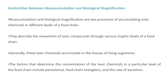Now let's look at the similarities. Both bioaccumulation and biomagnification are two processes of accumulating toxic chemicals, but at different levels in the food chain. When studying a particular level, we focus on bioaccumulation — how the pollutant is accumulating in that particular organism. In biomagnification, we study the overall food web — how it is getting passed on to the next level. Both processes describe the movement of toxic compounds through various trophic levels, and these toxic chemicals generally accumulate in the tissue of living organisms.